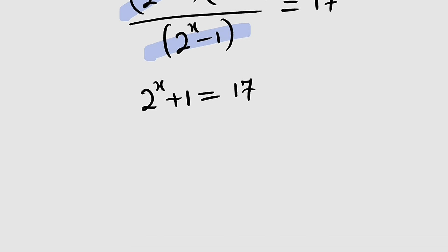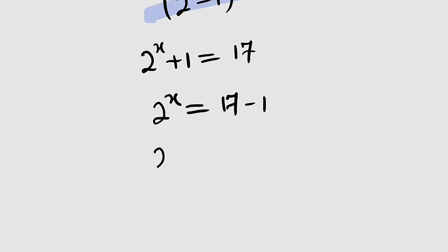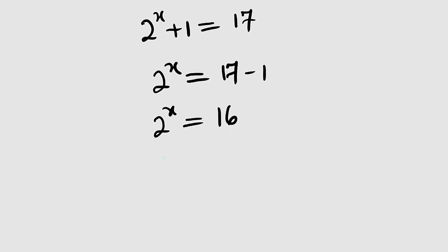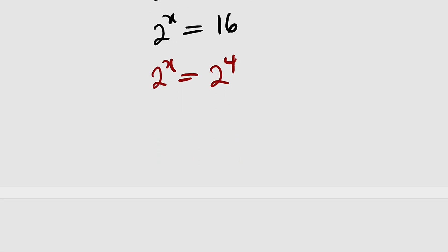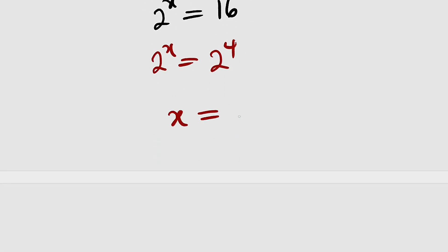Let us subtract 1 from both sides. We have 2 to the power of x equal to 17 minus 1, so 2 to the power of x is equal to 16. But 16 can also be expressed as 2 to the power of 4, because 2 times 2 is 4, times 2 is 8, times 2 is 16. So 2 to the power of x equals 2 to the power of 4. The bases are the same, which implies the exponents are the same. So finally, x equals 4 is the valid solution.